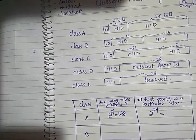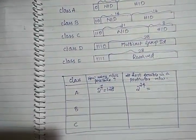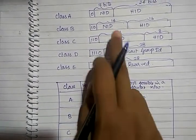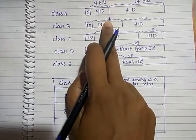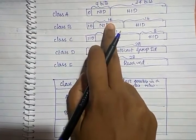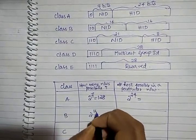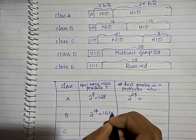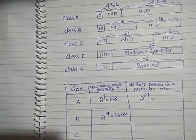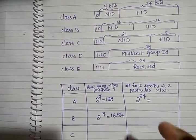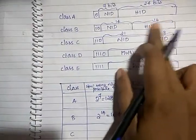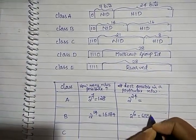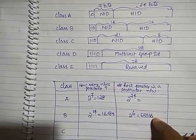For Class B, the Network ID is a 14-bit field. Using 14 bits, 2 to the power 14 combinations are possible, that is 16,384 different Class B networks. The Host ID is 16 bits, so 2 to the power 16 is 65,536 hosts are possible within a particular Class B network, though we will subtract 2 special values later.